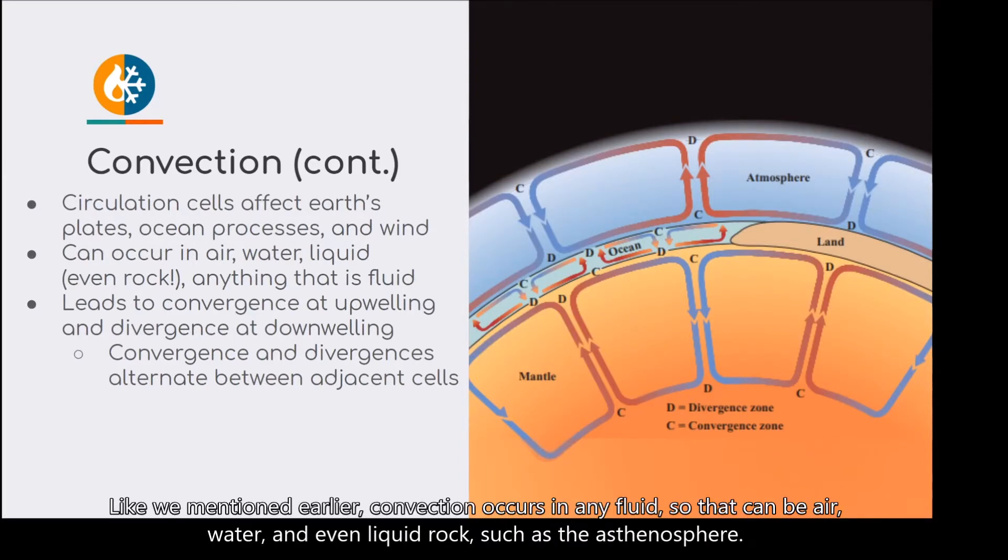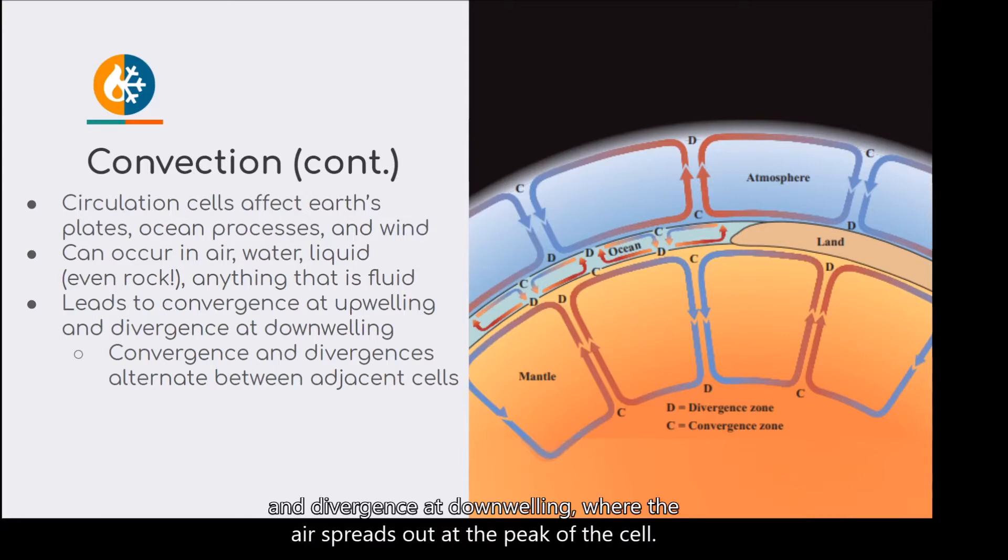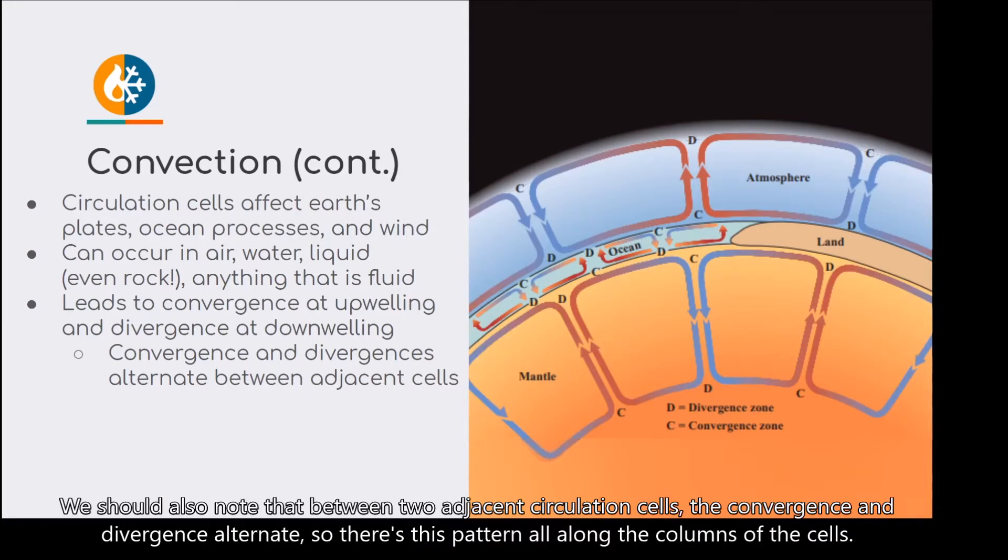Like we mentioned earlier, convection occurs in any fluid, so that can be air, water, and even liquid rock, such as the asthenosphere. Within these convection cells, we can see the diagram marks convergence at upwelling, meaning where the air came together towards that vertical column, and divergence at downwelling, where the air spreads out at the peak of the cell. We should also note that between two adjacent circulation cells, the convergence and divergence alternate, so there is this pattern all along the columns of the cells.